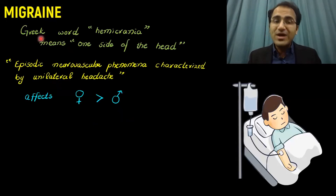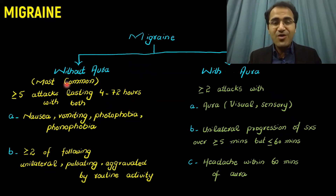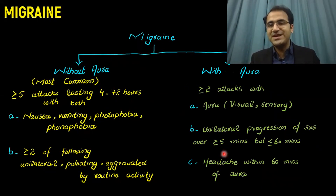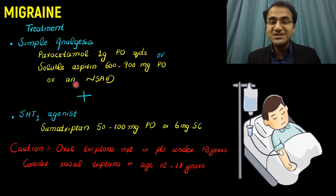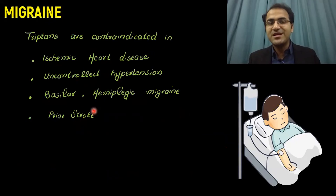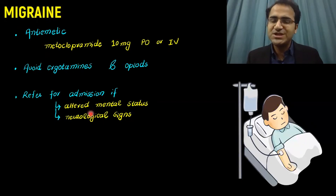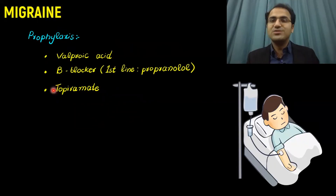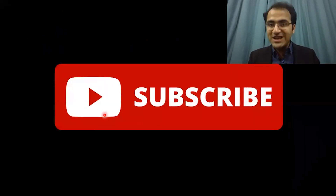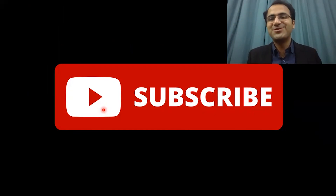In summary, we talked about what is migraine — more common in females, a neurovascular phenomenon — migraine without aura and migraine with aura and their clinical features, certain types of migraines, and treatment: simple analgesia, sumatriptan (with contraindications), anti-emetics, and referral for admission if the patient has altered mental status or neurological signs. Prophylaxis includes valproic acid, beta-blockers, and topiramate. If you liked this video, please click subscribe and check out the other videos on emergency medicine — the links are in the description below.